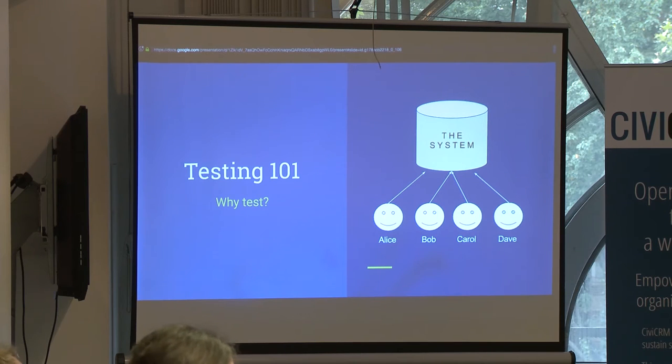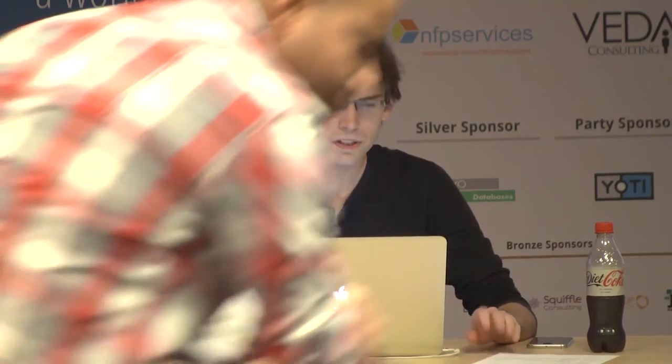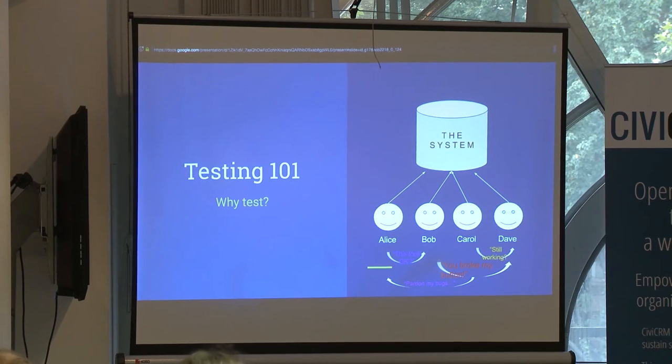The system is so successful that other developers get involved — Bob, Carol, and Dave come in and start making changes. Things start to break down because there's a lot of communication overhead. Alice makes a change and needs to check in with Bob. Carol asks Dave if things still work after her patch is merged. Bob yells at Dave because Dave merged a patch that broke the system. Carol merges a patch that works nine times out of ten, but says 'please pardon my bugs, it's not perfect.'